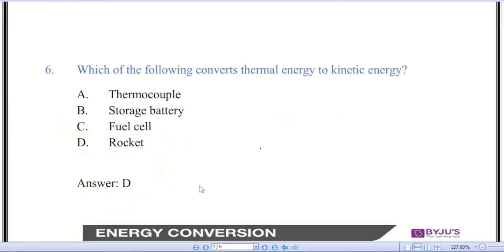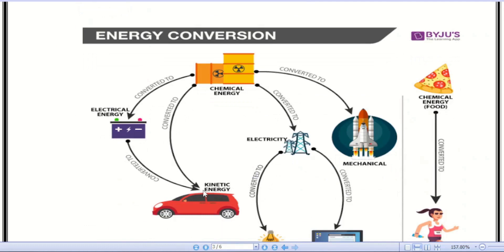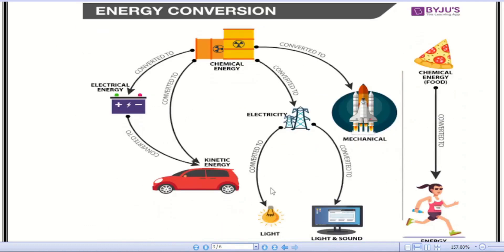Question number six: which of the following converts thermal energy into kinetic energy? There are four options. The correct answer is D — rocket. From the figure, different energy conversions are shown: chemical energy such as fuel like gas, diesel, and oil can be converted into kinetic energy and into electricity. Electricity can be converted into light and sound.